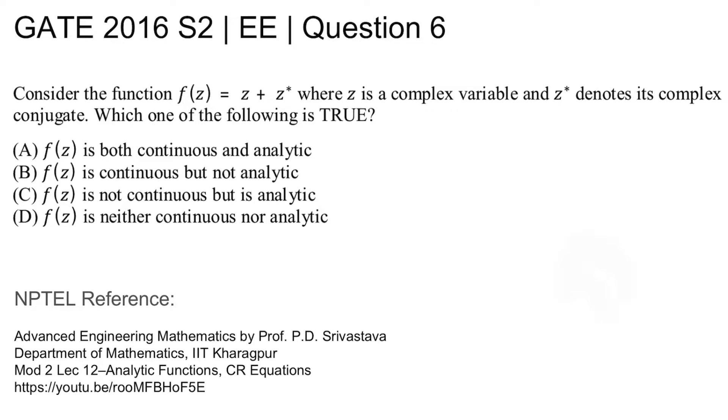f(z) is both continuous and analytic, f(z) is continuous but not analytic, f(z) is not continuous but analytic, f(z) is neither continuous nor analytic. Four options are given and we have to comment about the analytic and continuous state of f(z).